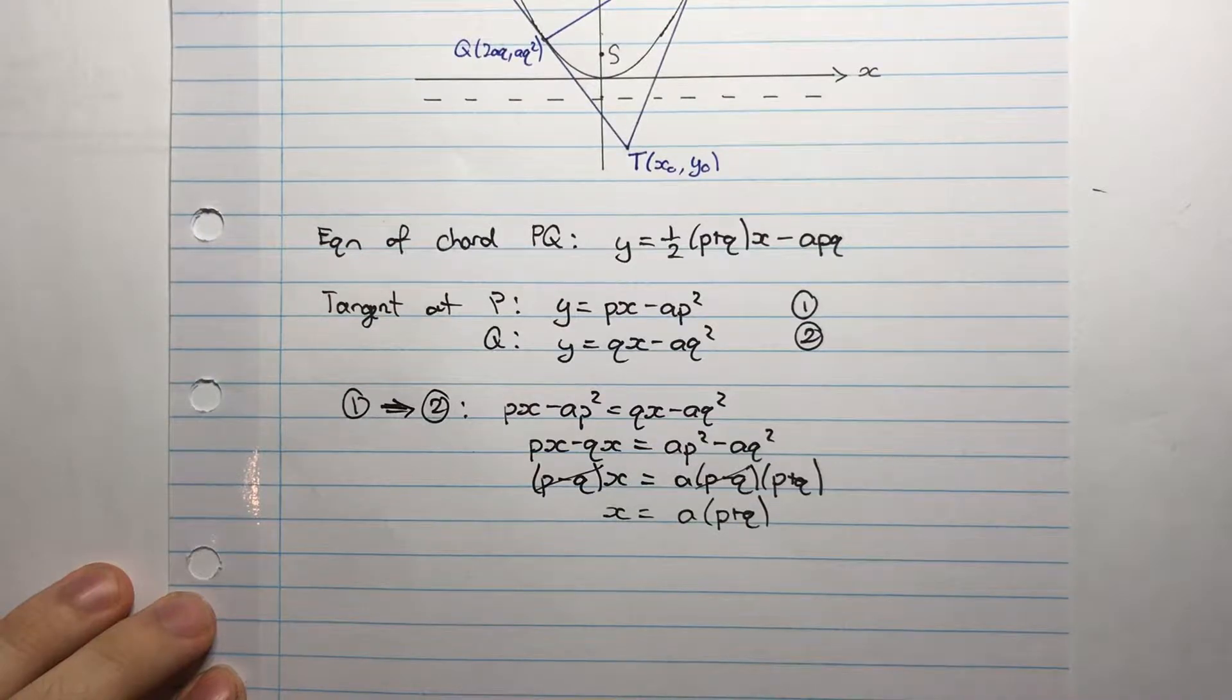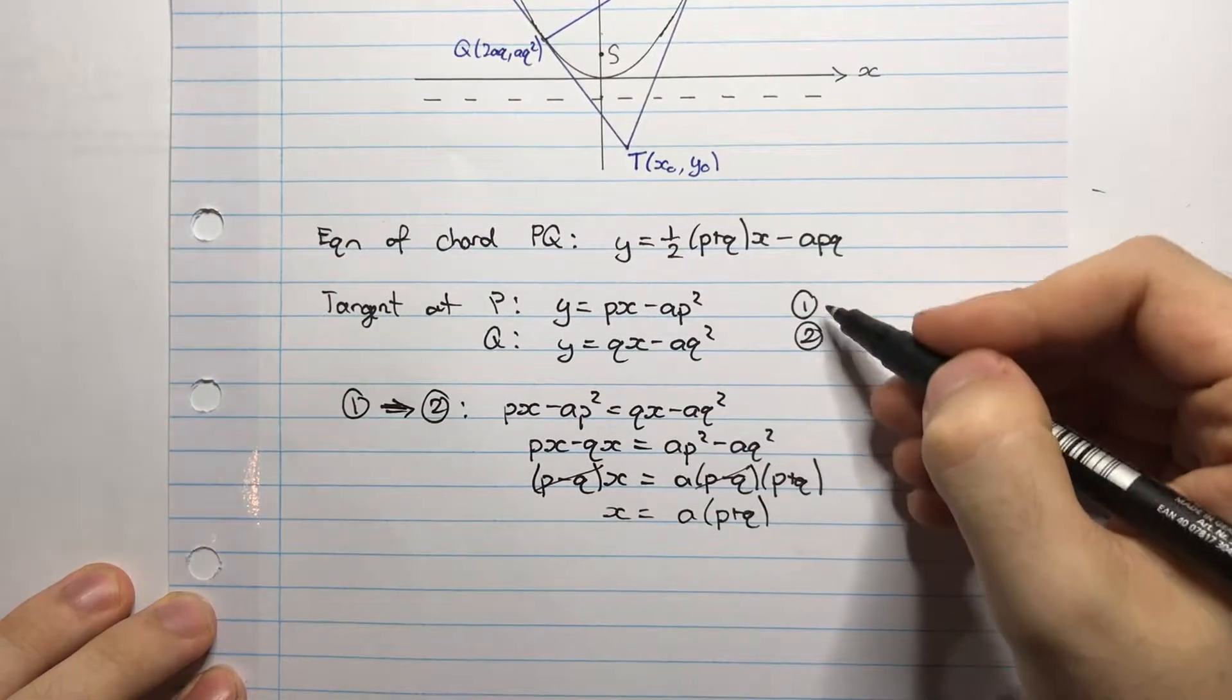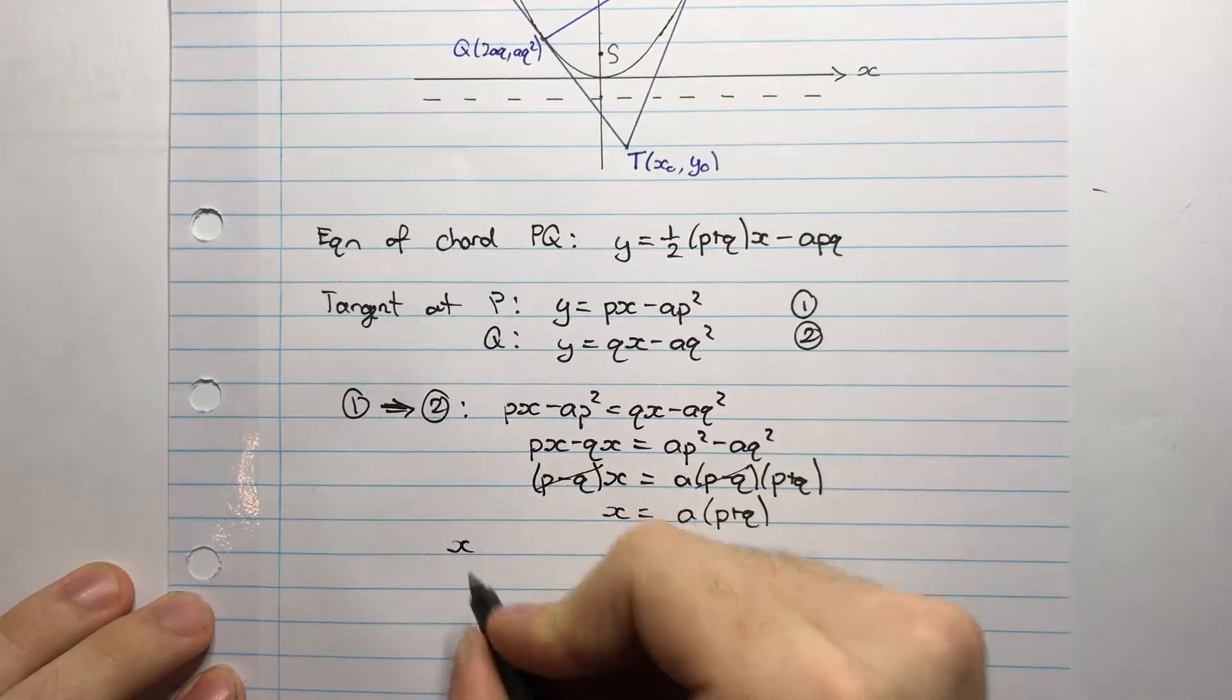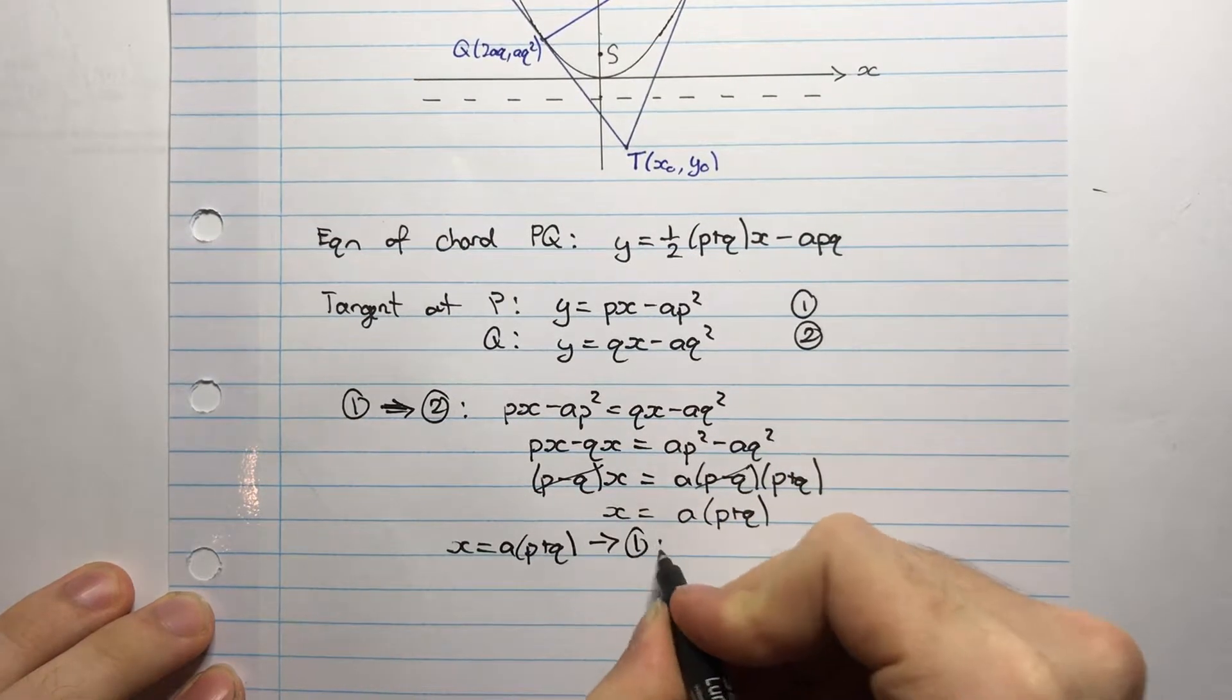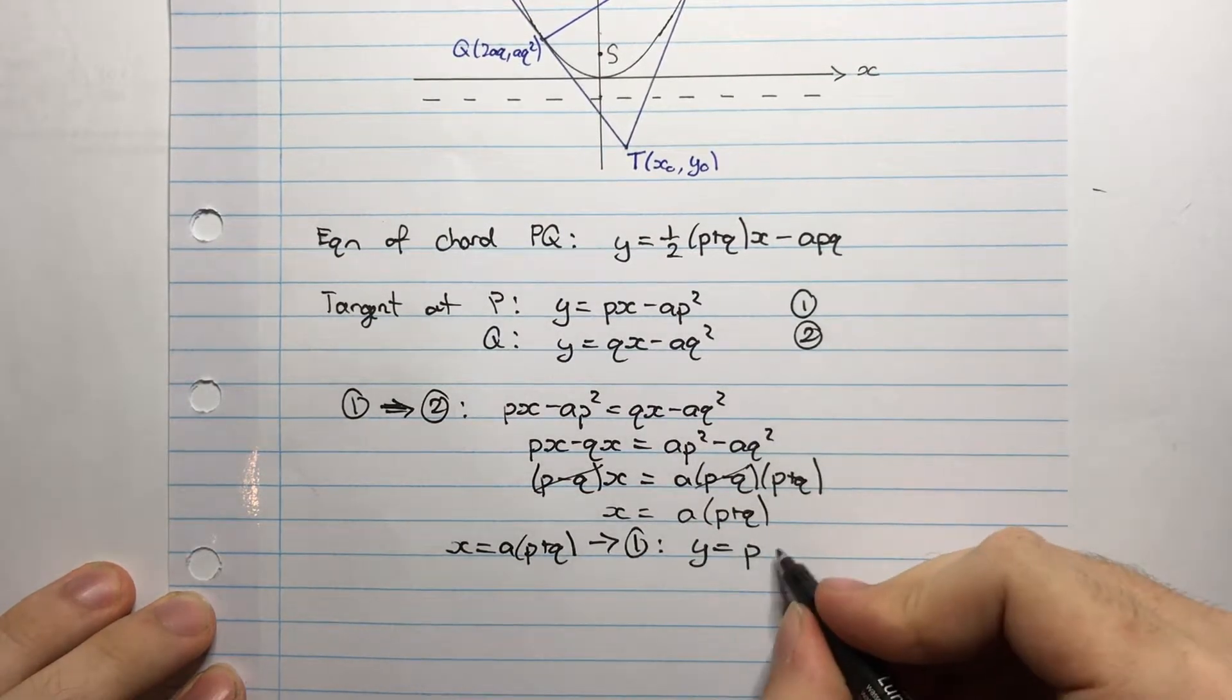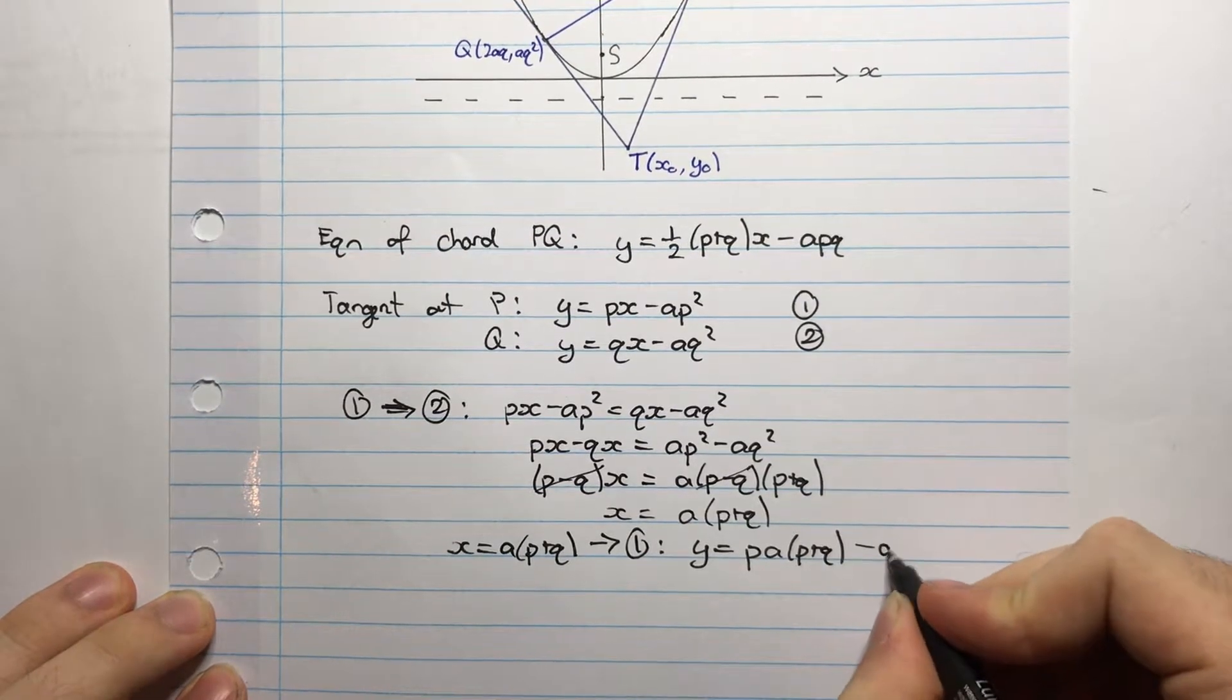Now I want to find the y coordinate of the point T. So I substitute this back into either of these equations. It will give me the same answer. So let's just say I'm substituting it back into 1. X equals A into P plus Q. Subbing that into 1 gives me Y equals P times X, which is this. So AP plus Q minus AP squared.